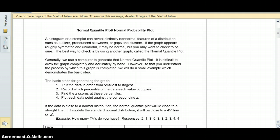The basic steps for generating the graph are: first, put the data in order from smallest to largest; record which percentile of the data each value occupies; find the z-scores of these percentiles; and then plot each data point against the corresponding z.